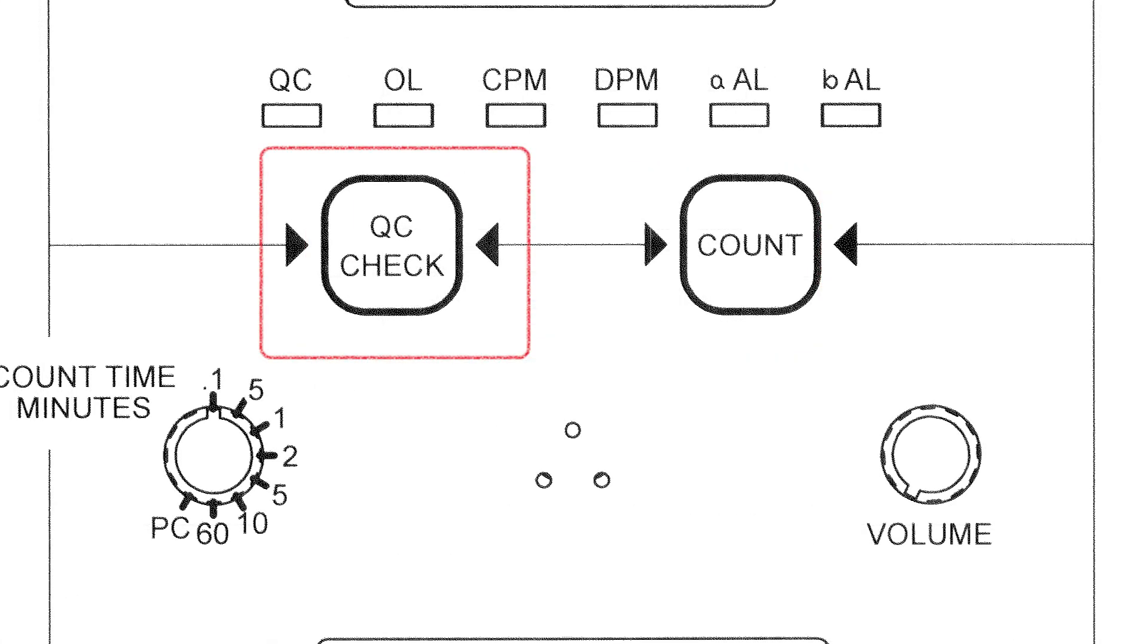A QC check button that starts the quality control check cycle and resets the two counters when depressed. Pressing this button during a QC check will restart the process. A count button that resets and starts the counting cycle and resets the two counters when depressed.